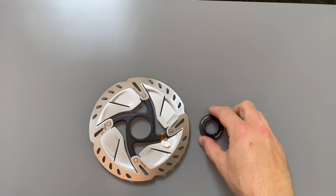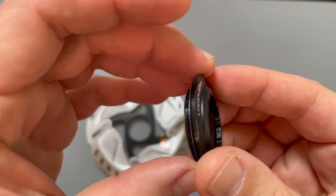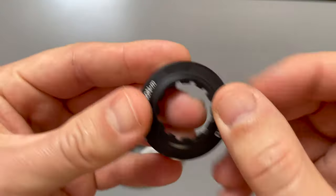Let's have a detailed look at these components. The centre lock nut is made from aluminium and feels quite light, with a little retaining ring in there as well.